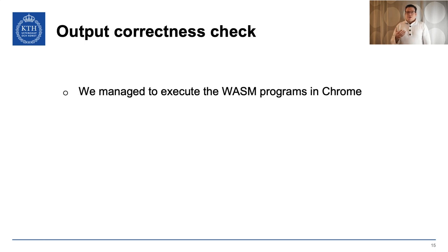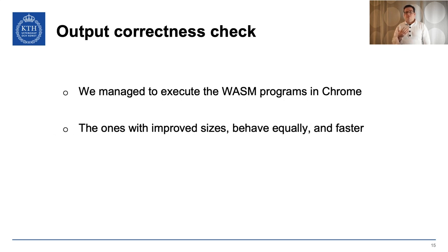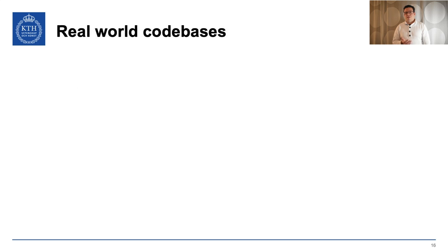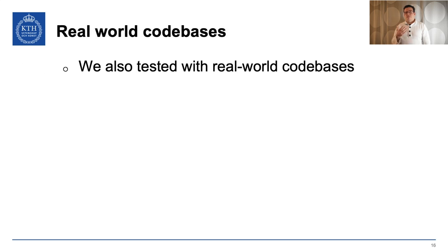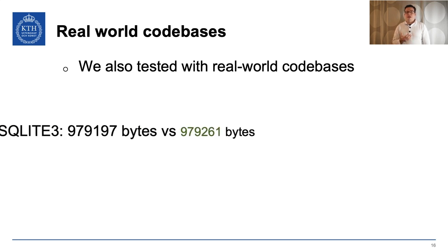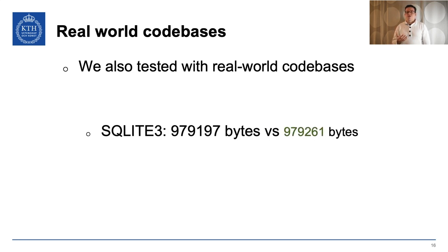We managed to execute all the programs in Chrome, and we saw that the programs behave correctly and equally. Specifically, the ones with improved size also behave faster than the original programs. Right now, we are also testing with real-world code bases, for example SQLite, and we have a solution to run the full test suite for these cases. Preliminary results show that there is in fact an improvement in the size of the code that is delivered.